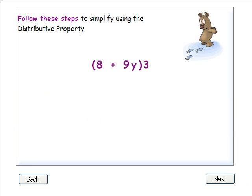Now look at this expression, 8 plus 9y times 3. This expression is solved the same way as the last one. The term to be multiplied, the 3, is just on the right side this time. Step 1: Write down any invisible positive signs.